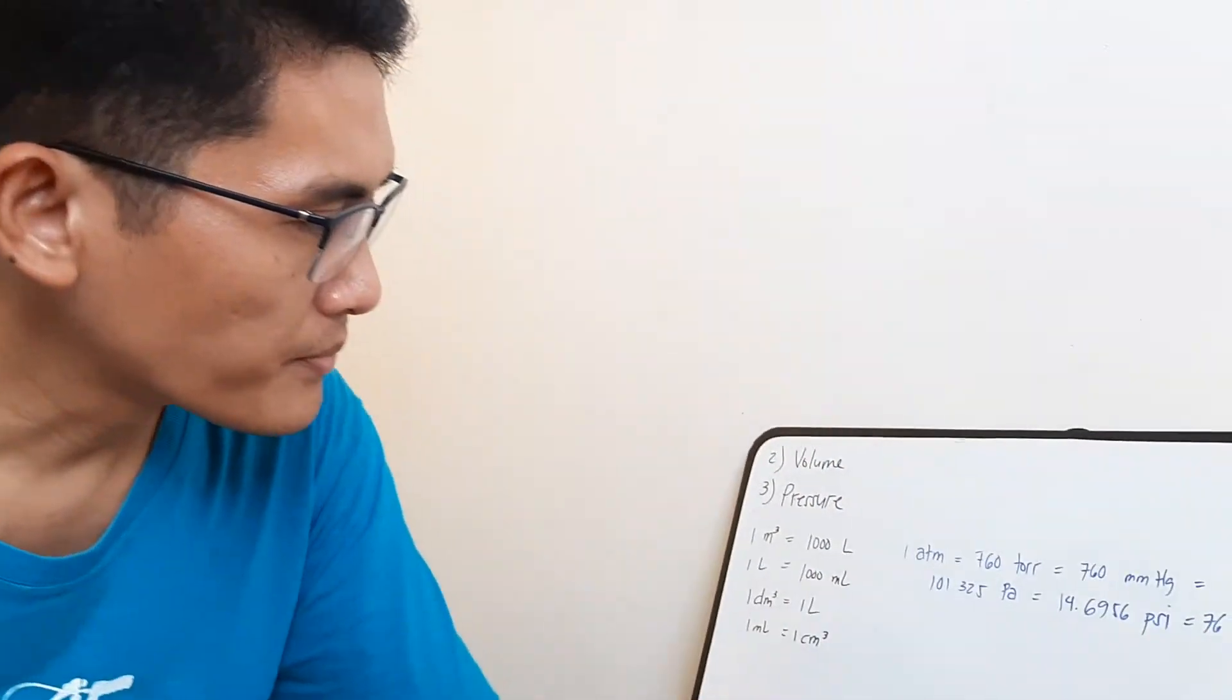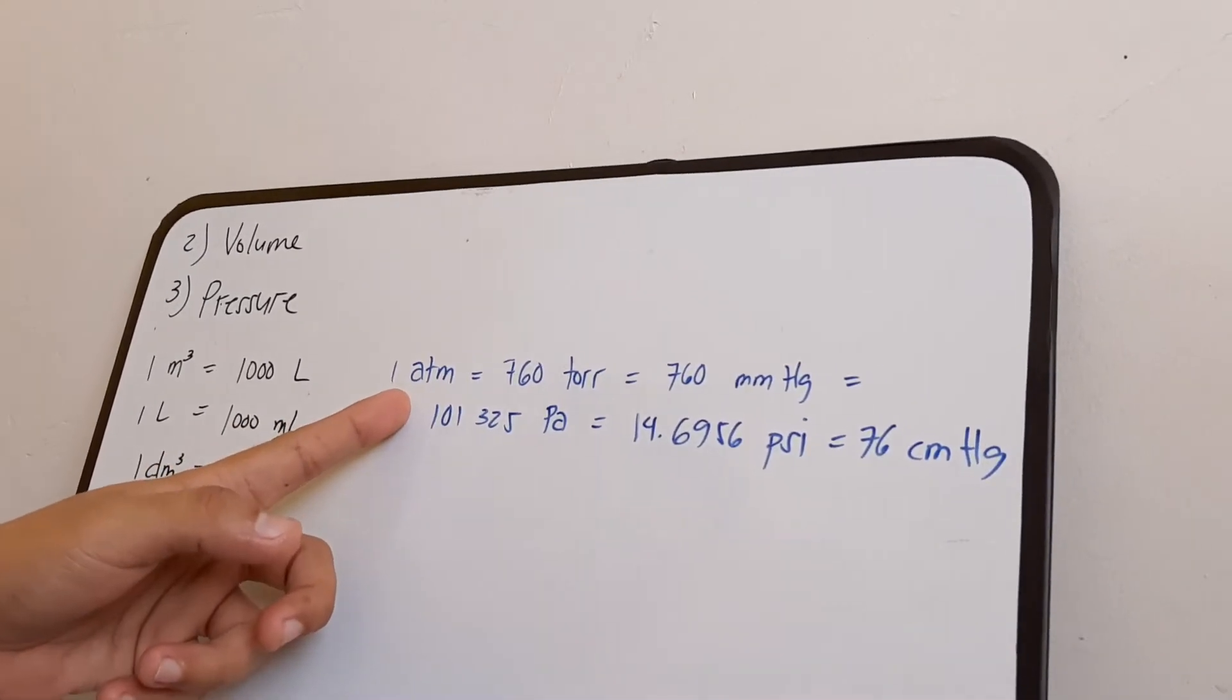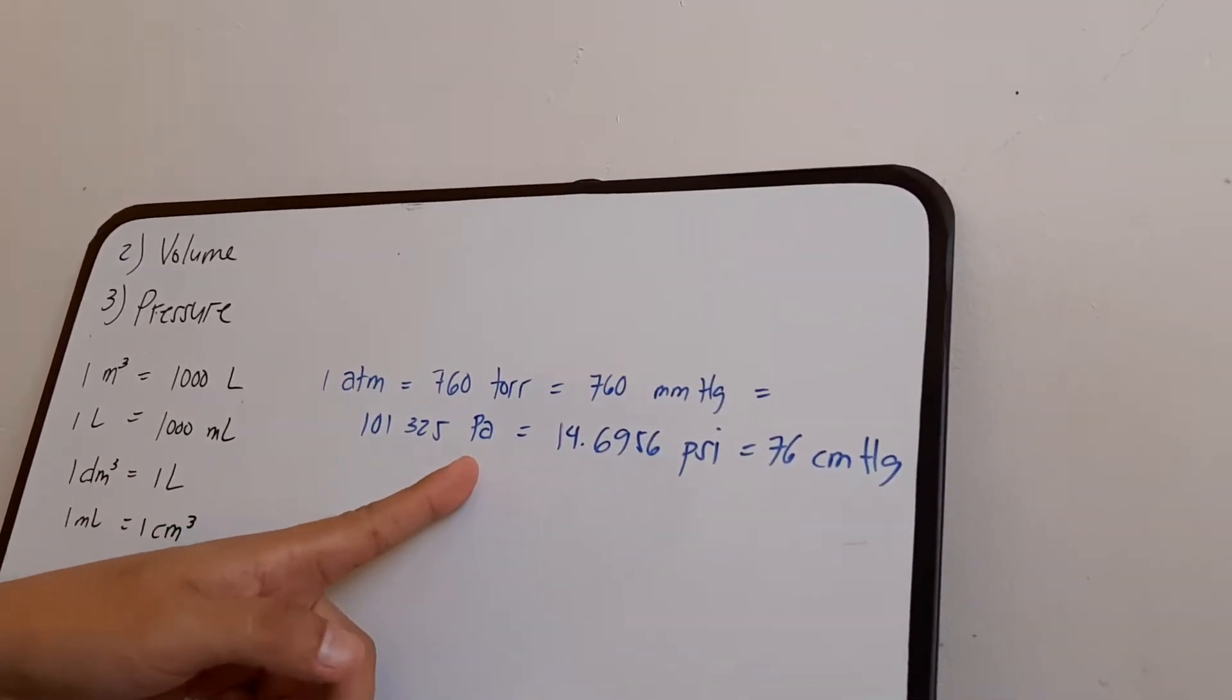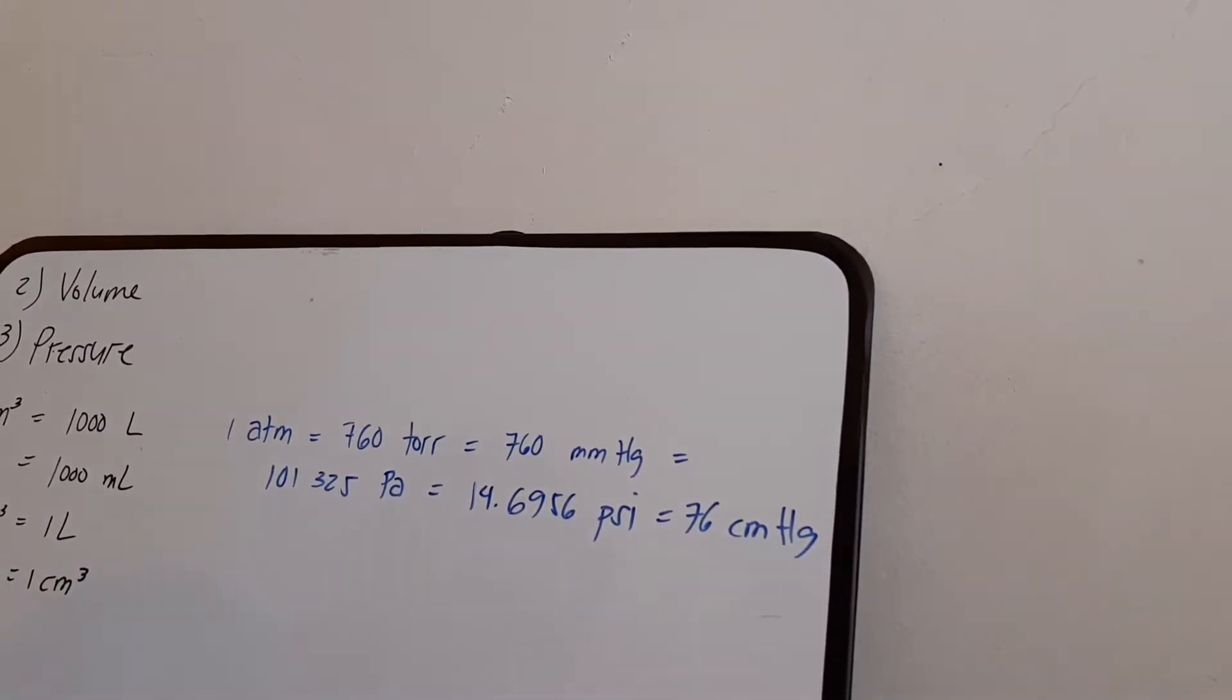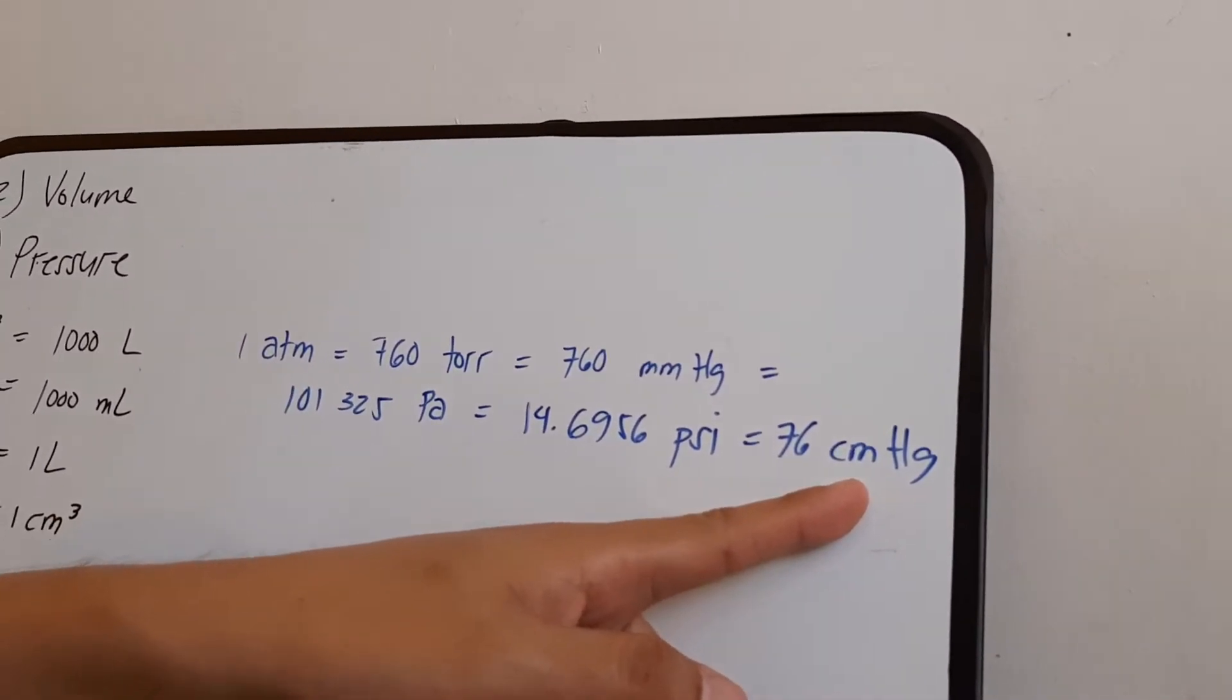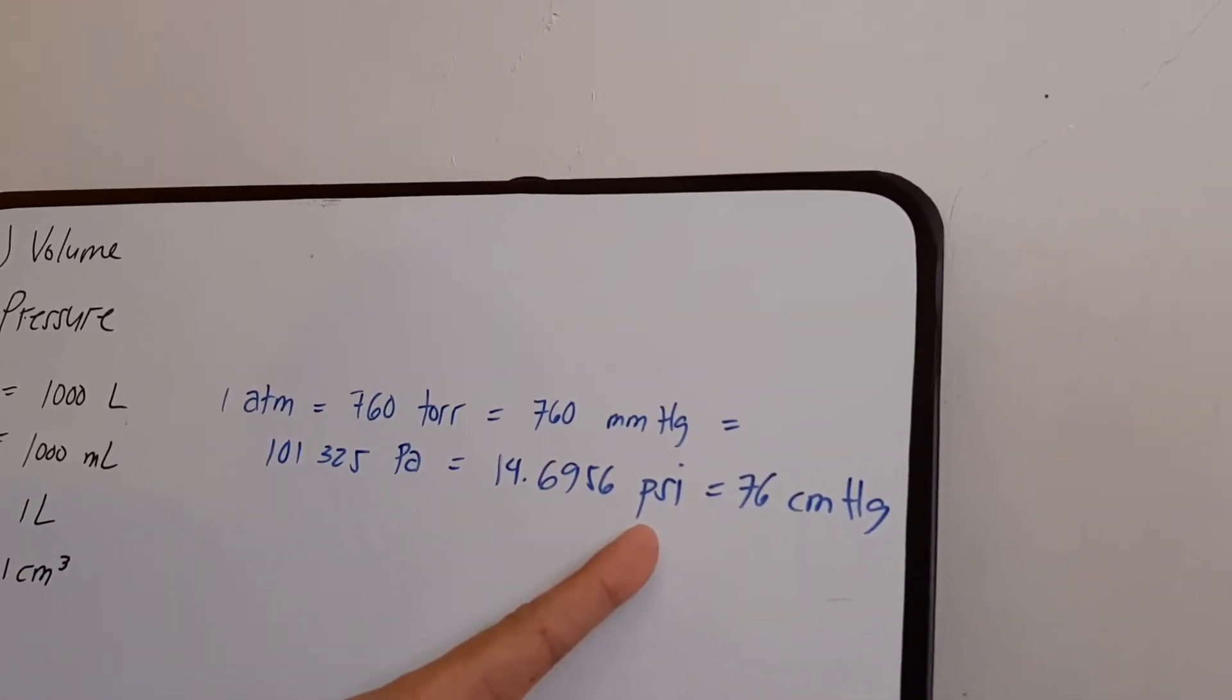And then for pressure, we will have Pascal (Pa), the atmosphere (atm), you have millimeters of mercury (mmHg), you have centimeters of mercury (cmHg), and pounds per square inch.